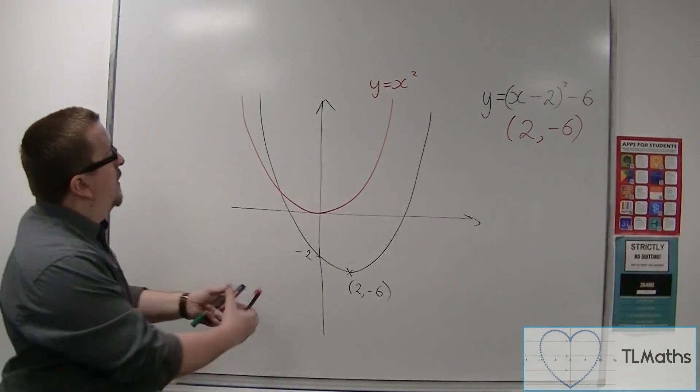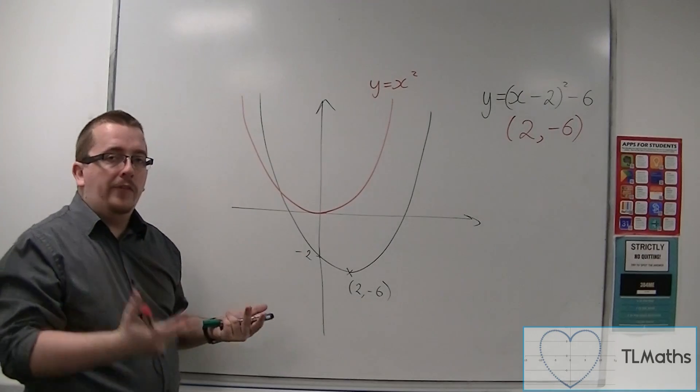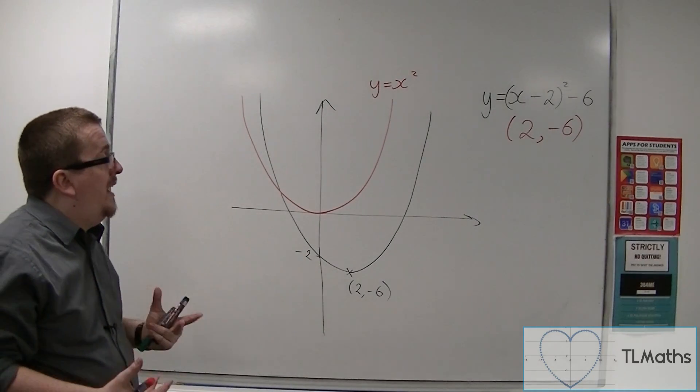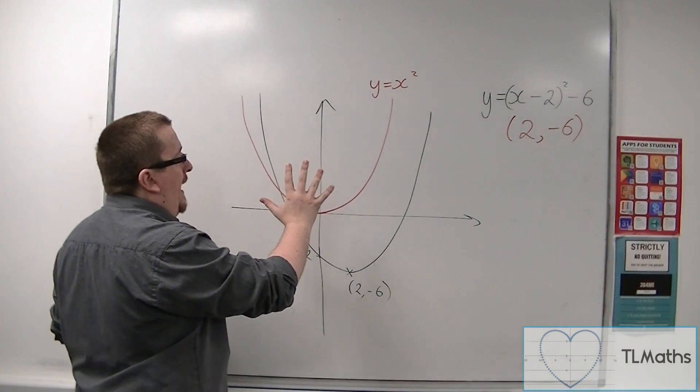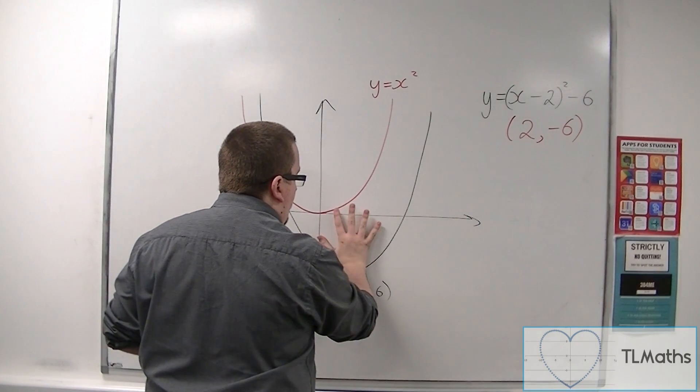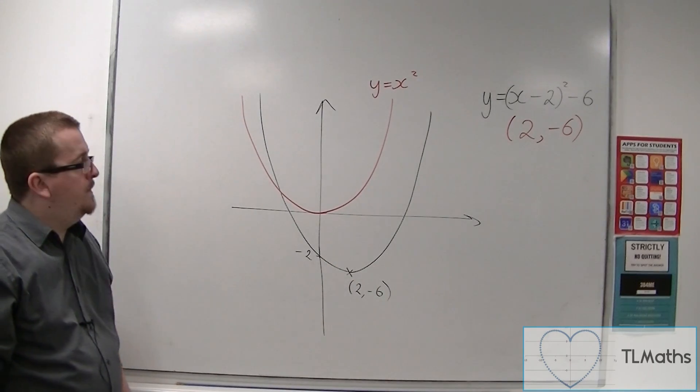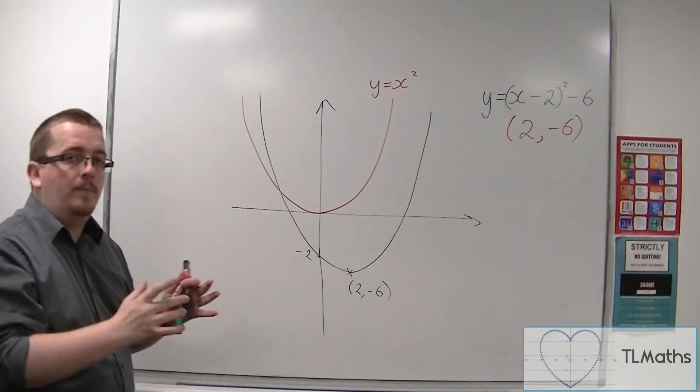Now I know that when I'm sketching it I cannot draw them both in exactly the same way. But effectively what has happened is that I could pick up y equals x squared and then I could just move it across the page and then sit it perfectly onto the black curve. So in actual fact these are both exactly the same shape and curve.